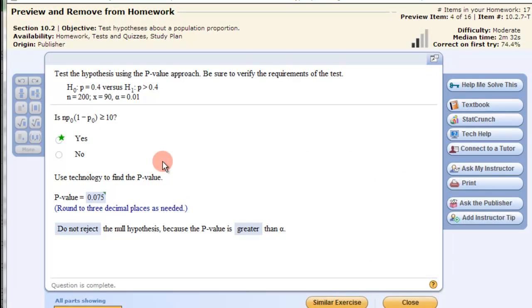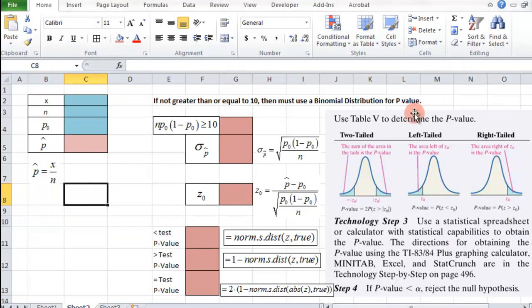In this video we're going to look at using Microsoft Excel for testing hypothesis with a p-value. Here's our information up here, and the first thing we always need to check is if this thing is true. It says it's true, but we'll put that information into Microsoft Excel to show it's true as well.